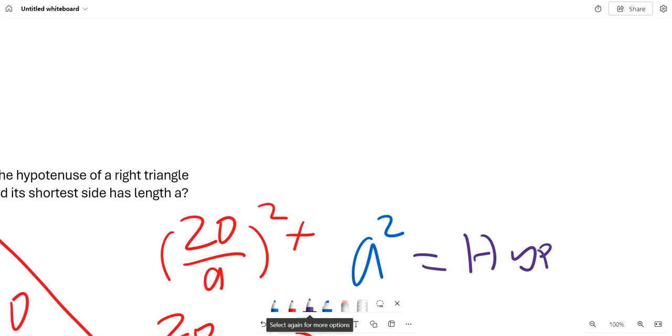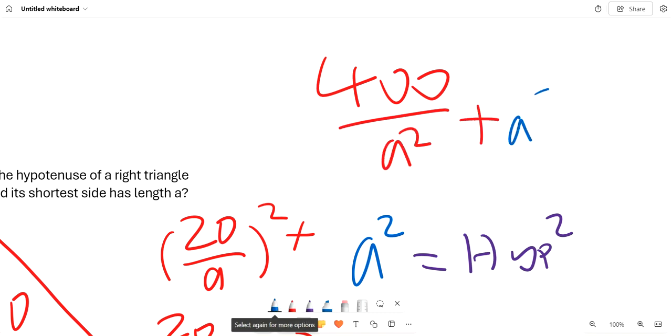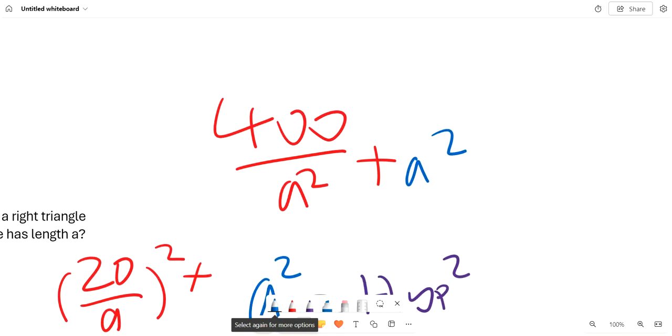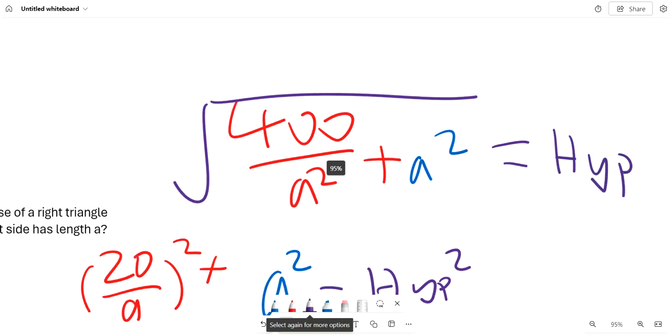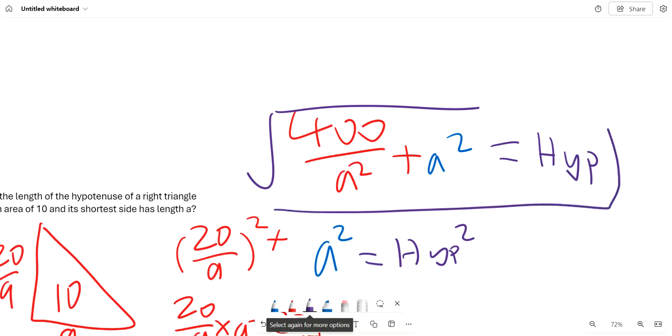So if we expand this, we get 400 over a squared plus a squared, and square root that and then we get the hypotenuse. So the answer is just this.